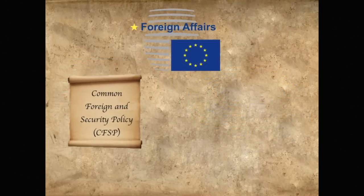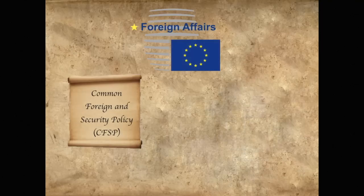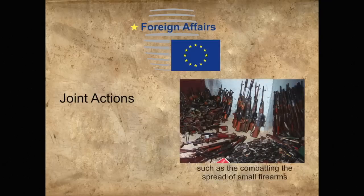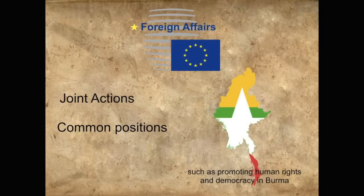Besides its normal legal instruments, the Council also decides on the EU's Common Foreign and Security Policy, or CFSP, which the High Representative then carries out. The Council decides on the leading principles and guidelines for the CFSP, as well as on common strategies that the EU will follow. Based on these leading principles, the Council adopts joint actions aimed at specific situations where EU action is deemed necessary, and adopts common positions which cover more general geographical and thematical areas, forming guidelines that Member States must conform to.